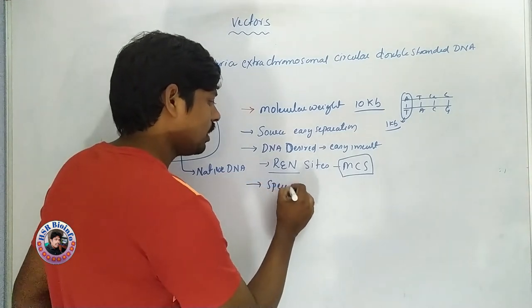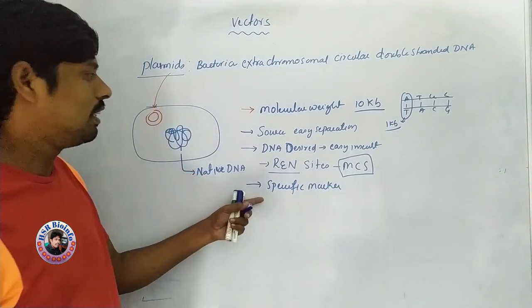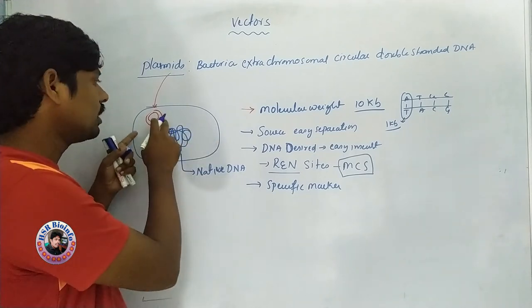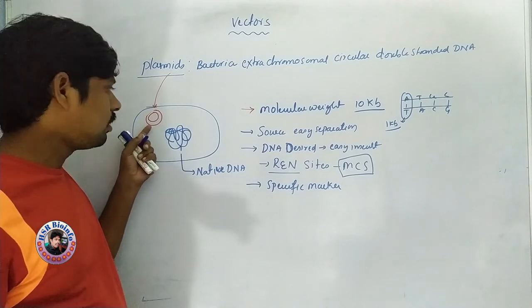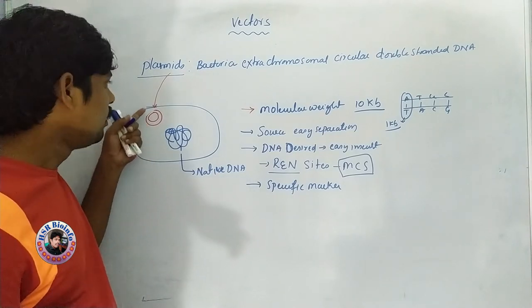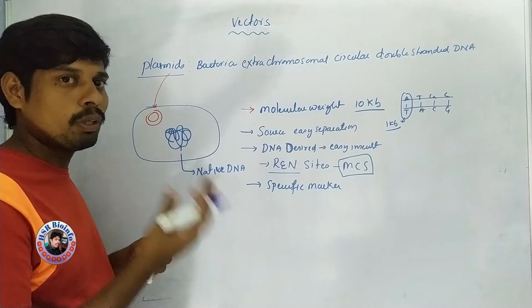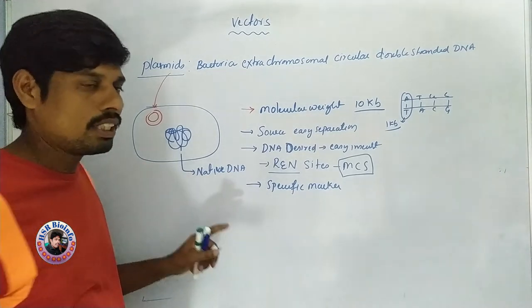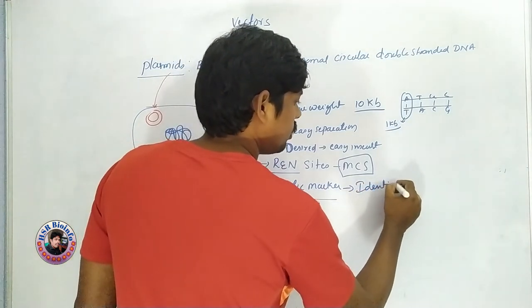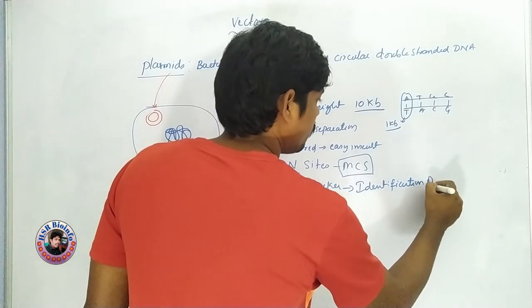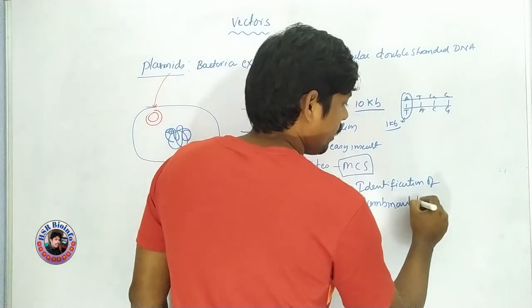There are specific markers present in the plasmid. These help in the identification of recombinant DNA - the DNA that has been recombined.